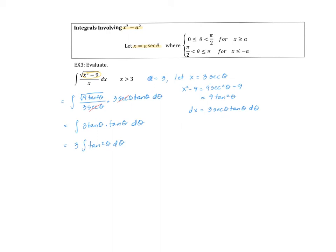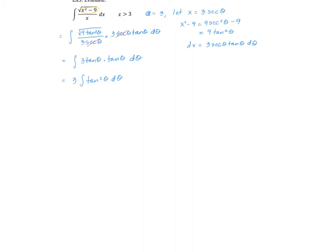I don't know what the antiderivative for that is. Maybe if I replace that with something with secant squared it'll help me, because I know the antiderivative of secant squared is just tangent. So I'm going to rewrite my integrand as three times the integral of secant squared minus one d theta. This becomes three times the tangent of theta minus theta plus my constant C.